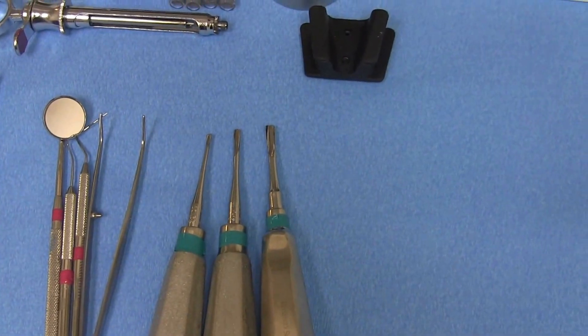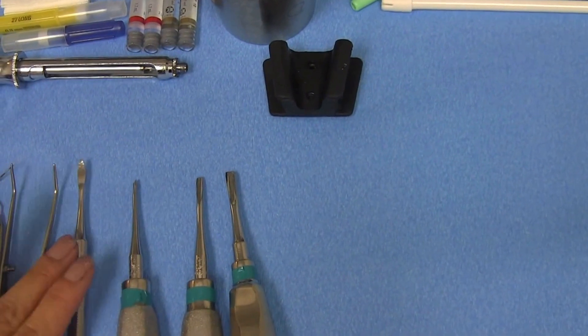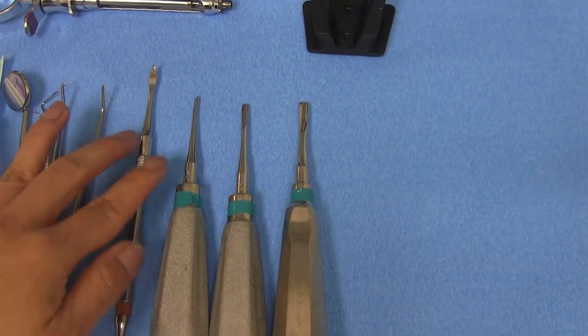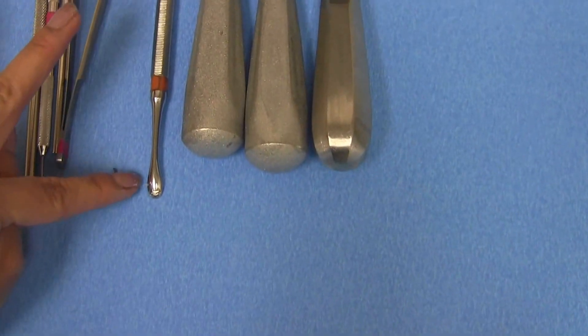You also want to put out your peristeel elevator, which is what doctor tends to usually start with. And that has a pointy end and a rounded end.